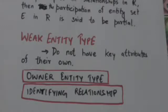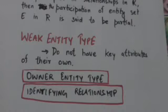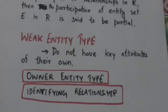This other entity type is called the identifying, or owner, entity type. The relationship type that relates a weak entity to its owner is called the identifying relationship of the weak entity type. A weak entity type always has a total participation constraint with respect to its identifying relationship.